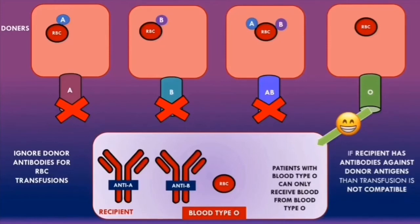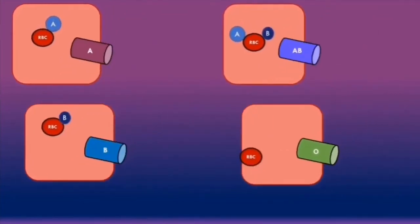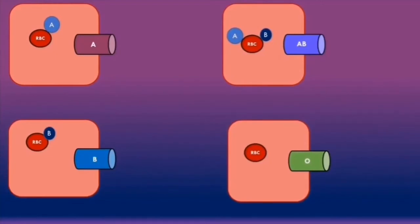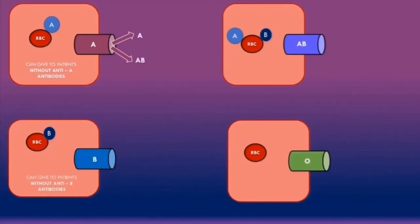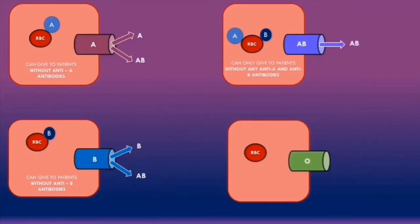If a blood type O recipient receives O blood, this is compatible because the donor red blood cells have no antigens for the anti-A or anti-B antibodies to react with. In summary, patients with blood type O can only receive blood from blood type O. Looking at this in reverse: blood type A can be given to blood groups A and AB; blood type B to B and AB; blood type AB only to AB; and blood type O to all ABO blood groups. This is why people with blood group O are called universal donors.